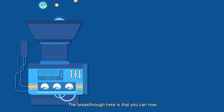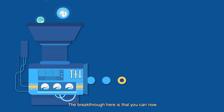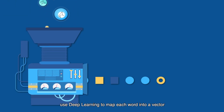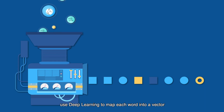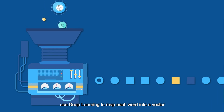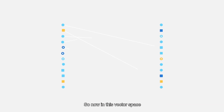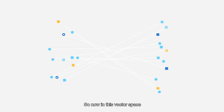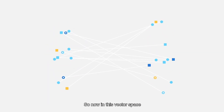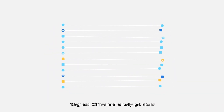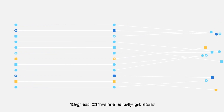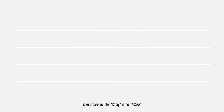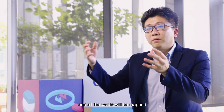The breakthrough here is you can now use deep learning to map each word into a vector. So now in this vector space, dog and chihuahua actually get closer compared to dog and car, and all the words will map to the same vector space.